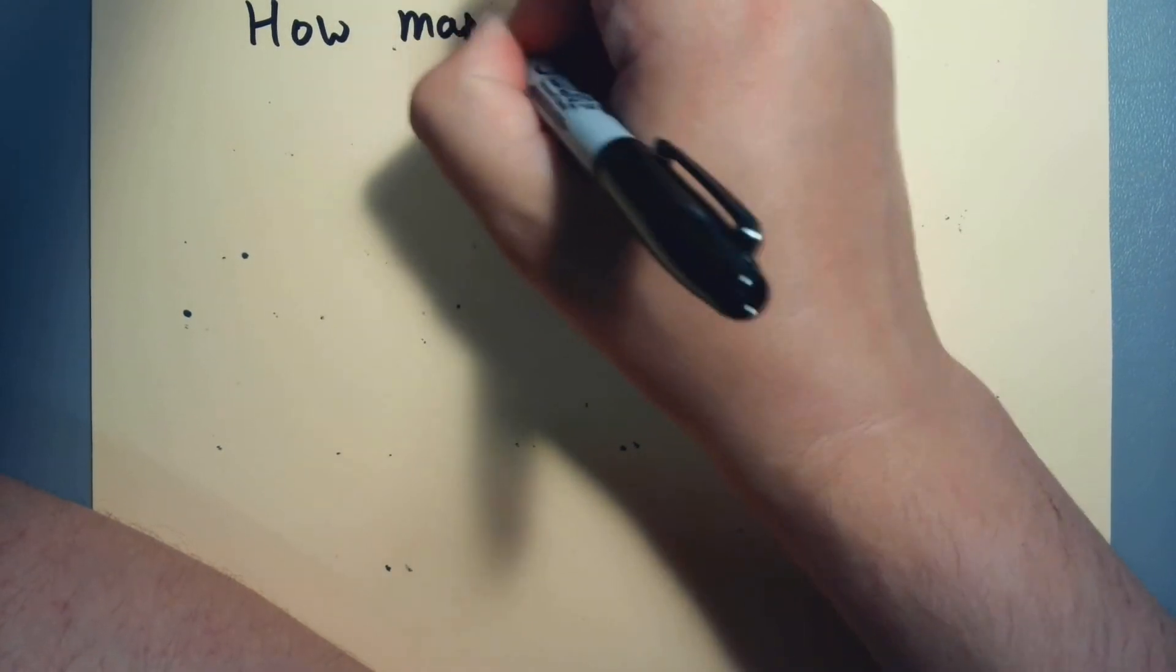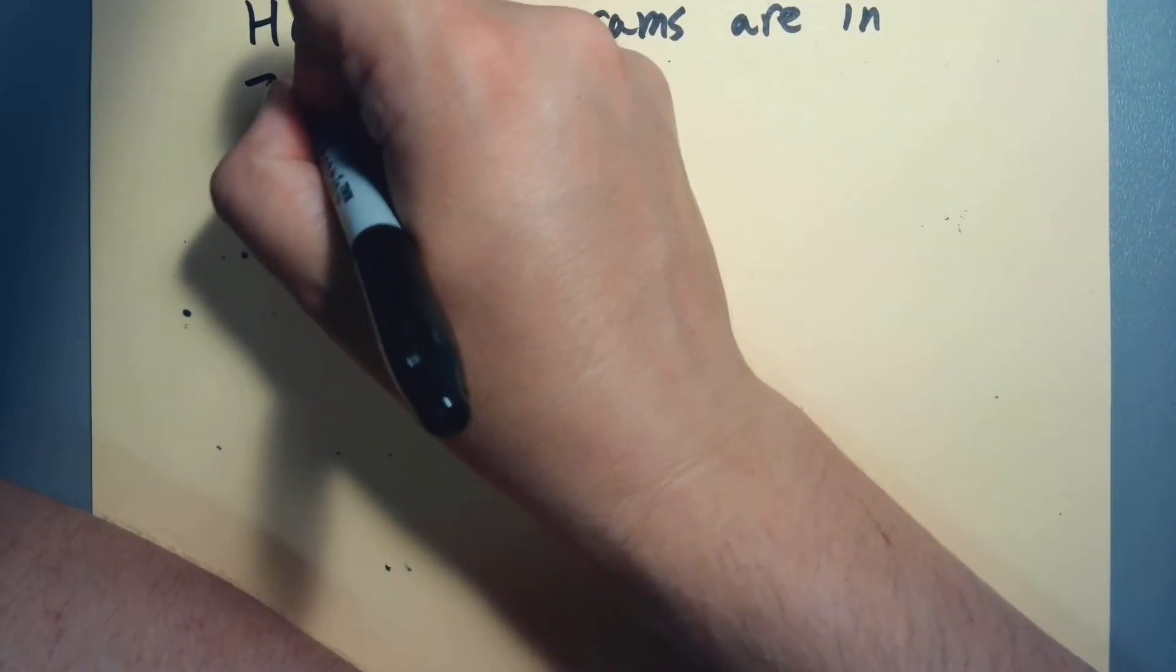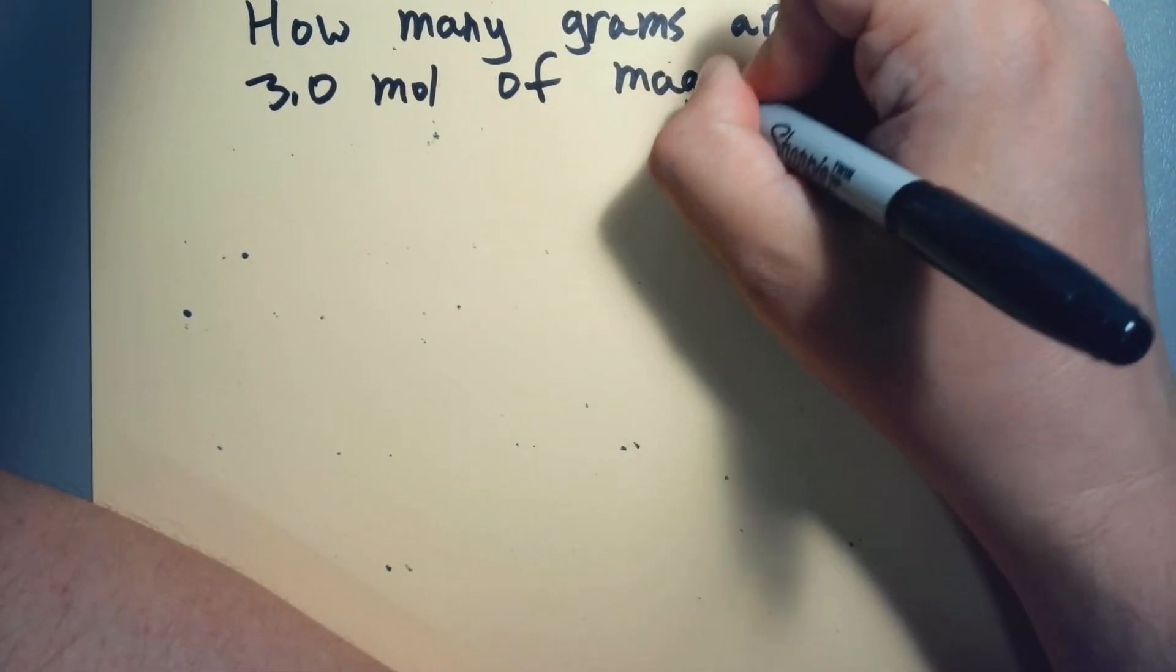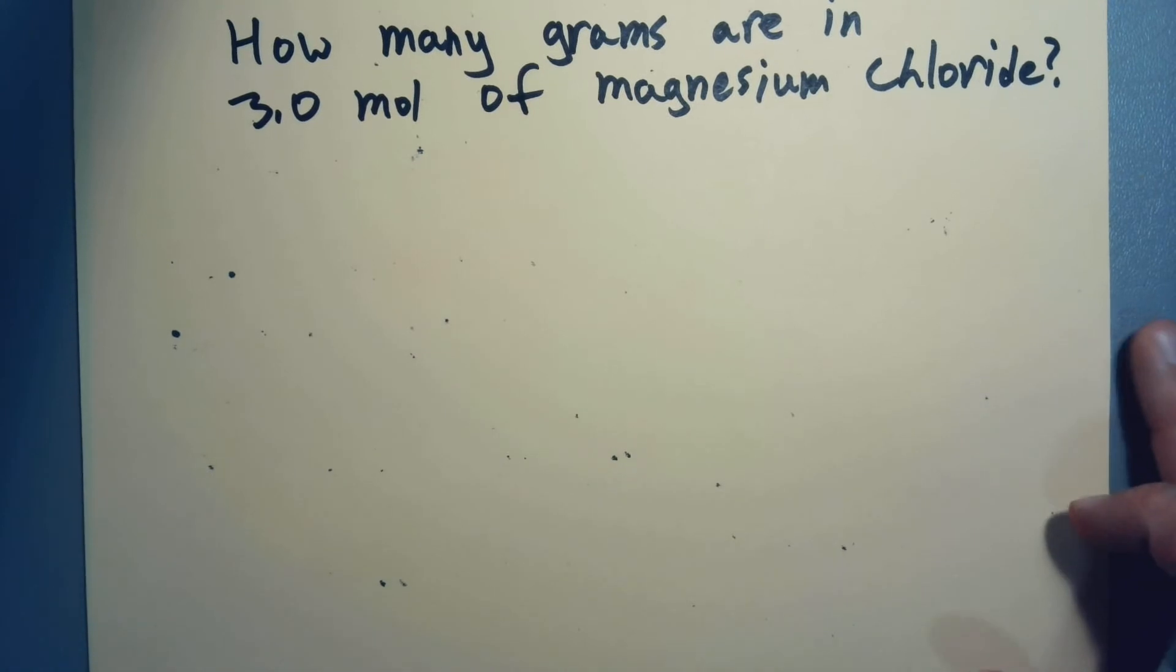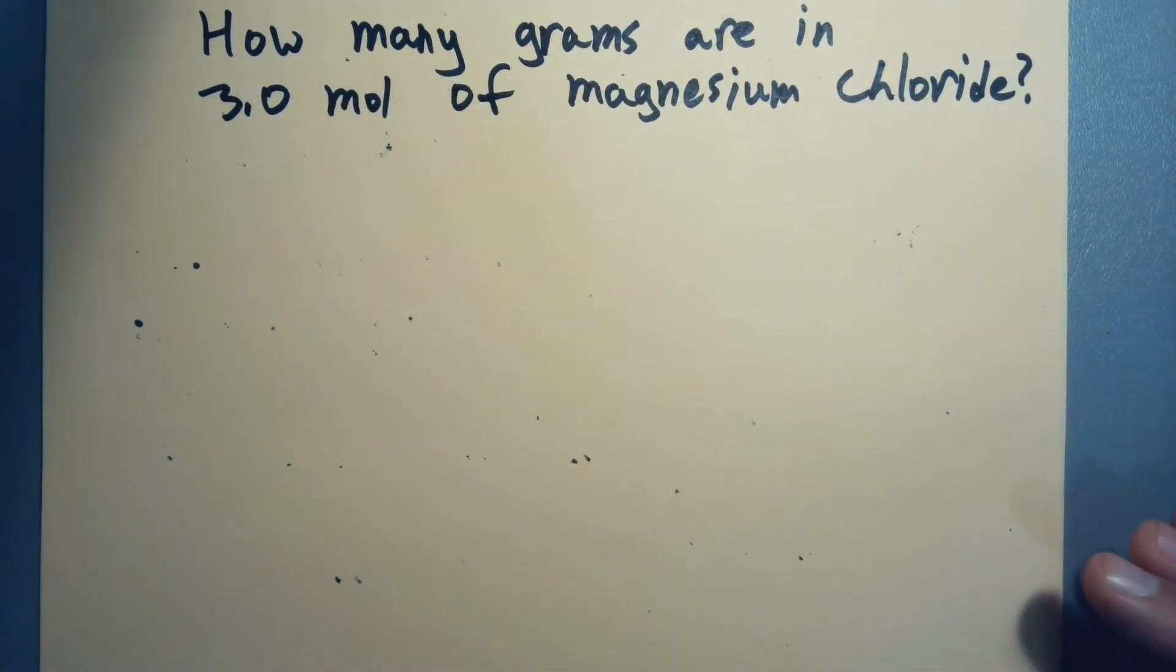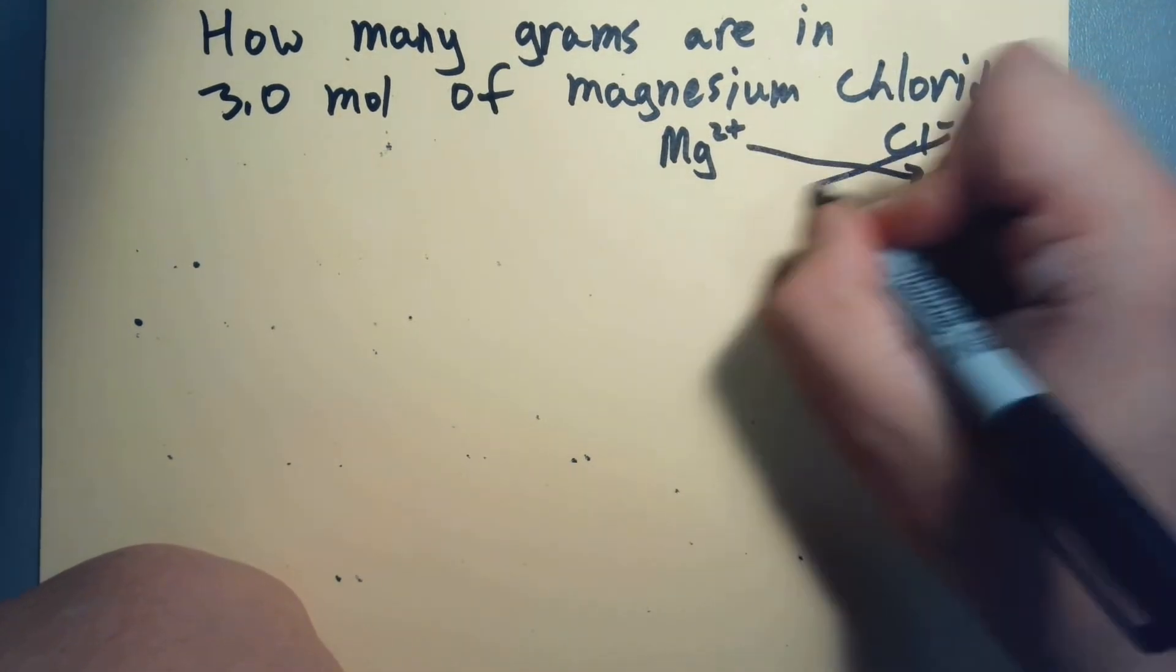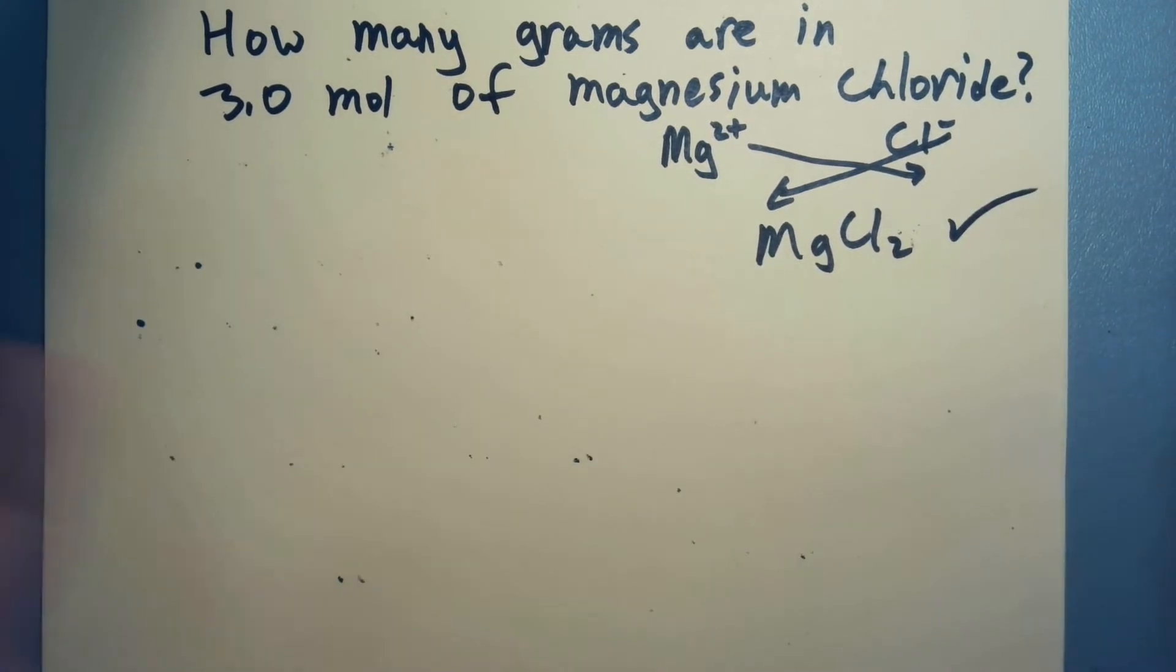We could ask a question like, how many grams are in 3.0 moles of magnesium chloride? I didn't write the formula - how would you know what that is? Well, you got a metal and a non-metal, it's an ionic compound. Magnesium is 2+, chloride is minus, do the diagonal - I never miss an opportunity to review something. You get MgCl2. Problem solved, right? We've solved all of our problems. Not quite.